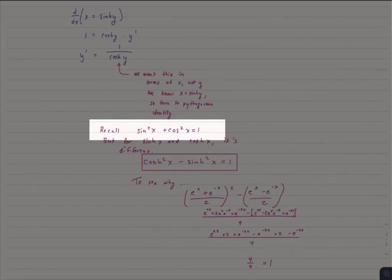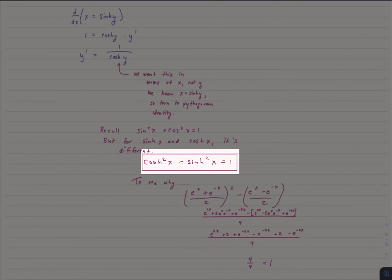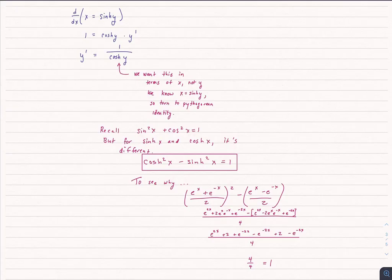Sine squared x plus cosine squared x is 1. However, with hyperbolic functions, it's cosh squared minus sinh squared, and that equals 1. And you can see the algebra I've done to show that is, in fact, true. How somebody came up with to prove that initially, I'm not quite sure, but it doesn't matter.